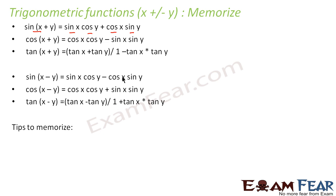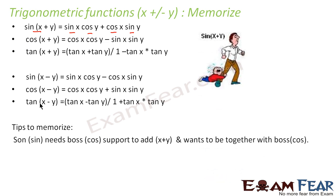It must be confusing because there are six formulas and it's very difficult to remember them, so we have a tip to remember. For sine functions, remember this line: son — that is sine — needs boss, and boss is cos.